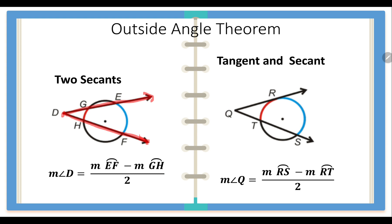Or we may have one tangent and one secant. We have tangent QR and secant QS, with the point of intersection still outside the circle at point Q, forming angle Q. Again, we have the two intercepted arcs — the blue and the red. So the measure of angle Q is equal to the measure of arc RS less the measure of arc RT, and we divide that difference by two.